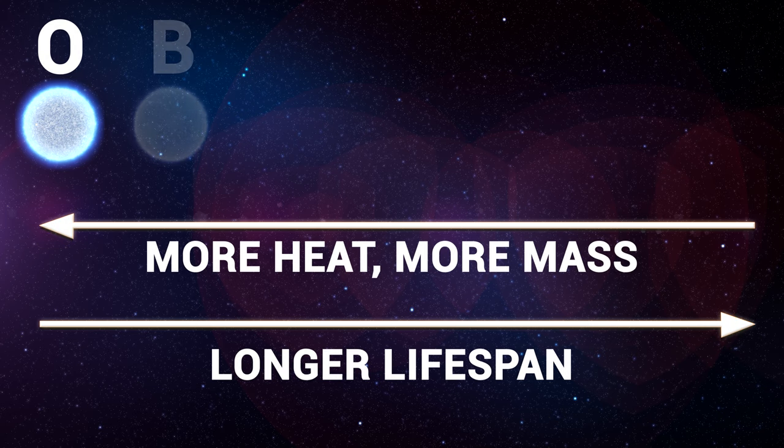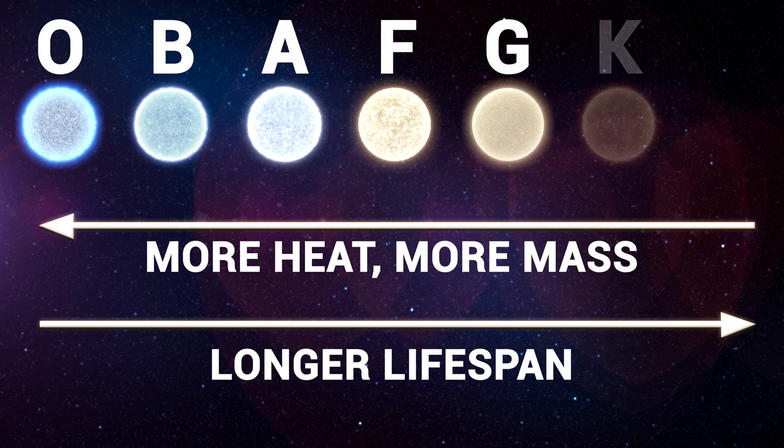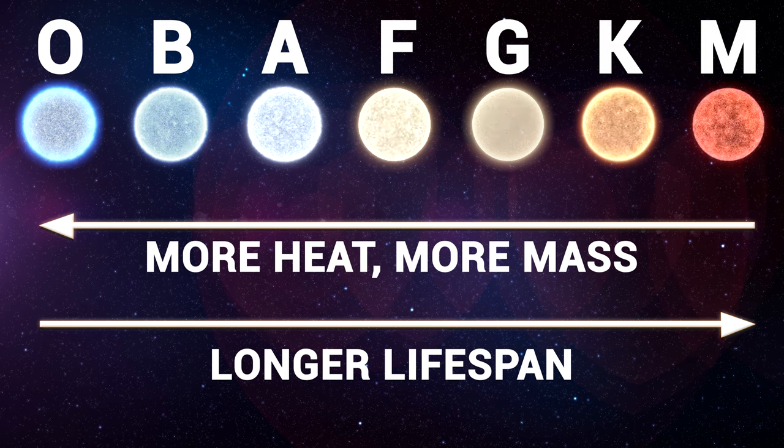Stars in the present-day universe are classified using the Morgan-Keenan system, a system where stars are given a letter ranging from O to M, with O being the hottest and M being the coolest.